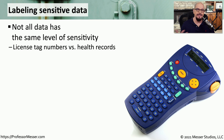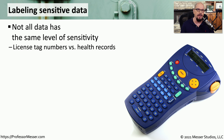We often talk about the sensitivity of data, but the reality is that different types of data have different levels of sensitivity. For example, let's take the difference between a license tag number and your private health care information. Your license tag number is a relatively sensitive piece of information, but it is something that is visible to everyone who's driving by your car.